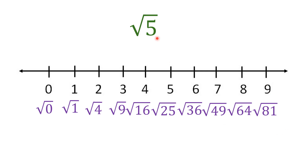Square root of 5 falls right in between square root of 4 and square root of 9, so we know it should be plotted between 2 and 3 on the number line. You cannot get the exact location, but you can estimate whether it's closer to 2 or 3. Since 5 is closer to 4 than to 9, we put the point closer to 2. That's where square root of 5 goes.